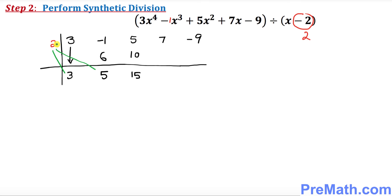Once again multiply 2 diagonally with 15. That's going to give you 30. 30 plus 7 is going to make 37. And multiply once again 2 times 37. That's going to make 74. 74 and negative 9 would give you 65 as a remainder.